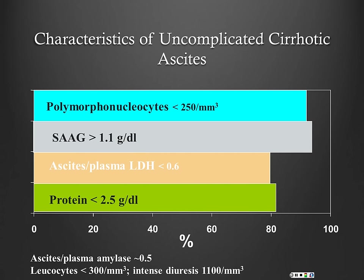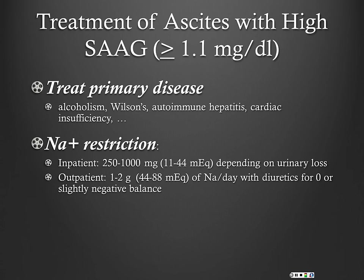So what does the ascites of uncomplicated cirrhotic ascites typically look like? They have a low PMN count, high SAAG, low ascites-to-plasma LDH, and total protein usually less than 2.5 — and that last finding is what helps separate cirrhotic ascites from cardiac ascites.